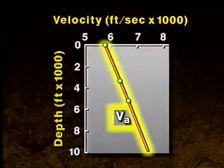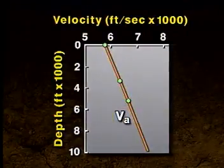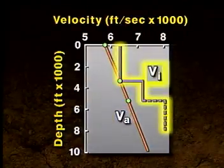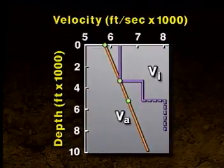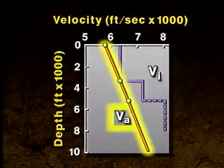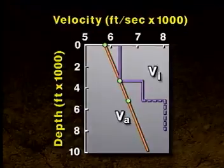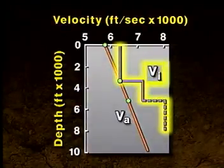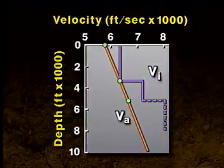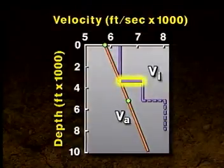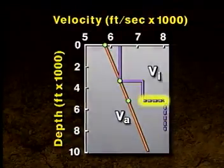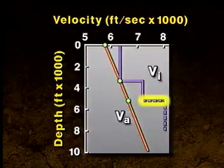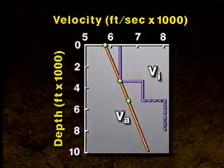Now let's compare the average velocity curve we calculated earlier to the interval velocity curve we just calculated. Notice the smooth nature of the average velocity curve versus the stepped or layer cake appearance of the interval velocity curve. The discrete boundaries in the interval velocity curve indicate stratigraphic and velocity differences between adjacent layers.